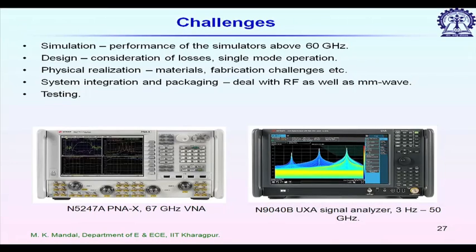For example, simulating the same structure at six gigahertz versus sixty gigahertz and above will consume much more computational resources. Simulating a filter at six gigahertz might take ten to fifteen minutes on a three gigahertz processor with eight GB RAM, but designing the same filter for sixty gigahertz can take a few hours.